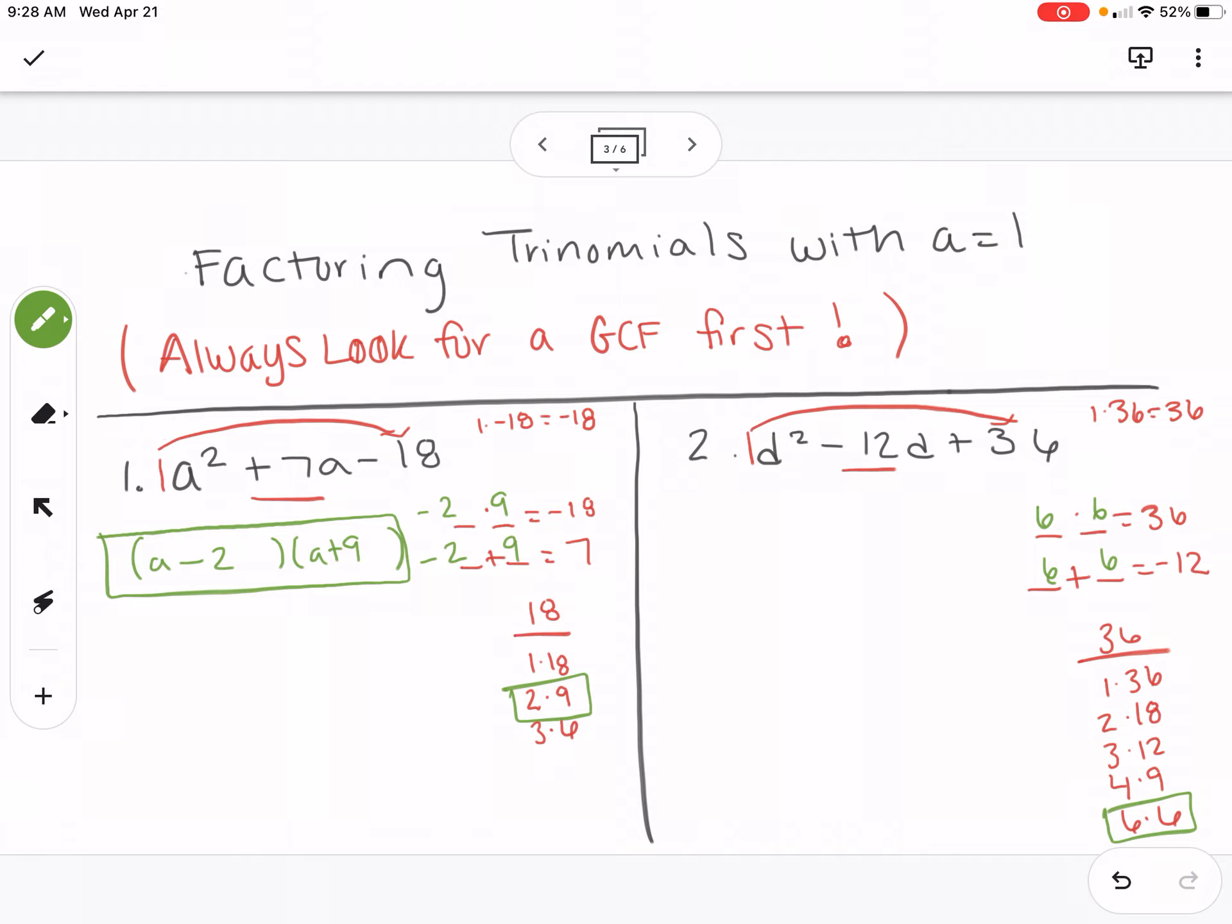Well, if I only make one of them negative, then they'll add up to zero. I'm going to have to make both of them negative, so that they'll add up to negative 12. And then when you multiply two negatives, you get that positive 36.